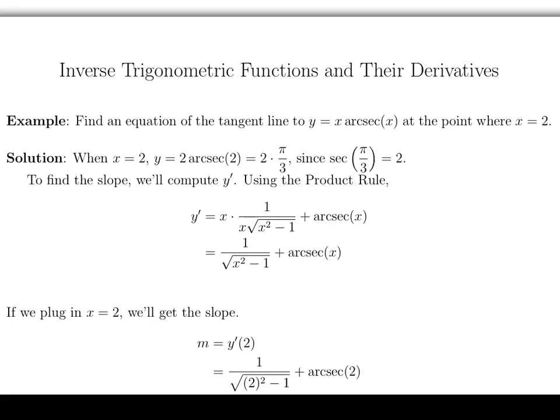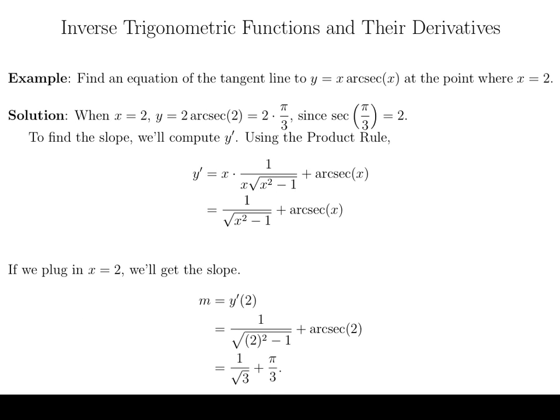We already talked a little while ago about what arc secant of 2 is, so now we've got our answer. The slope is going to be 1 over square root of 3 plus pi over 3.